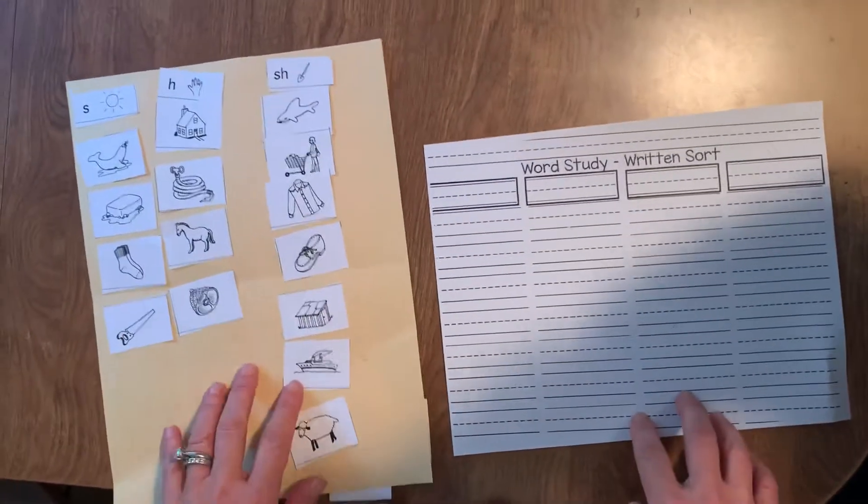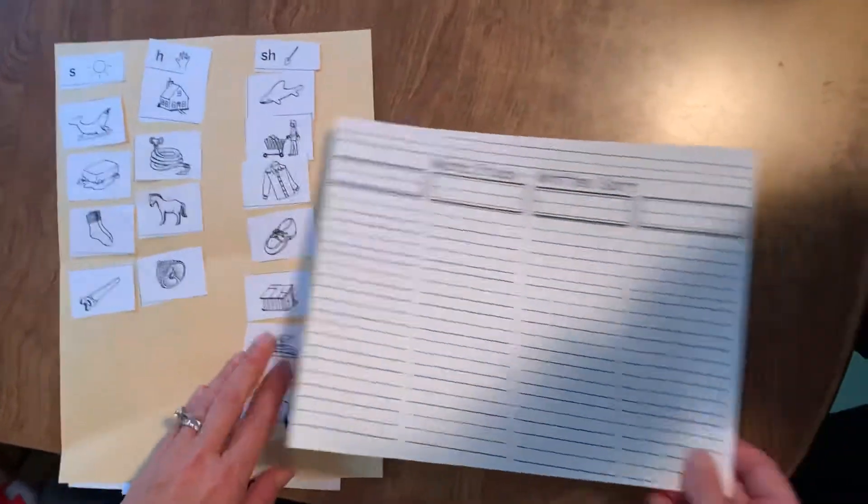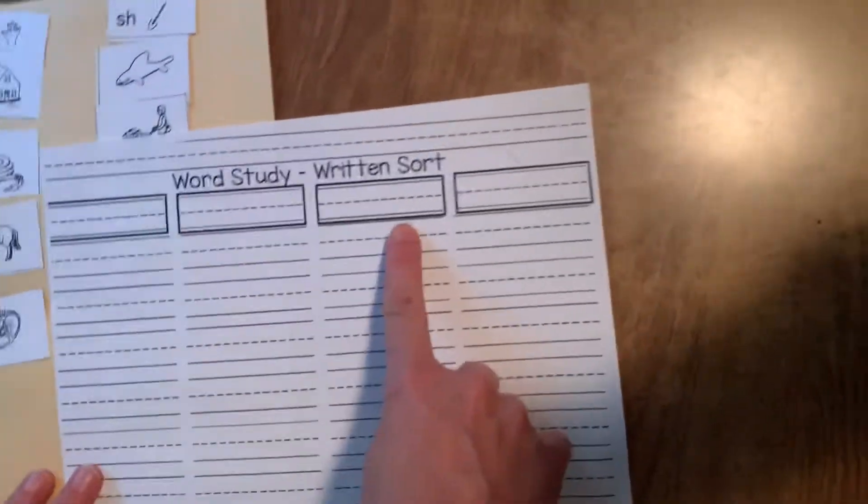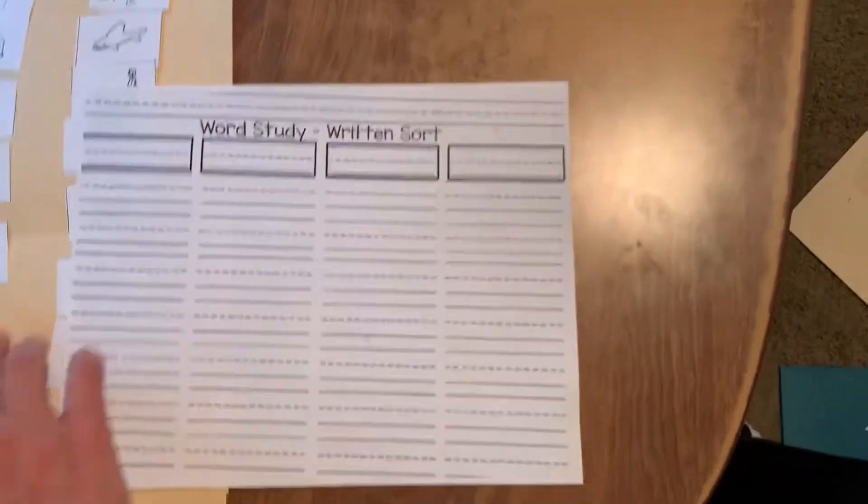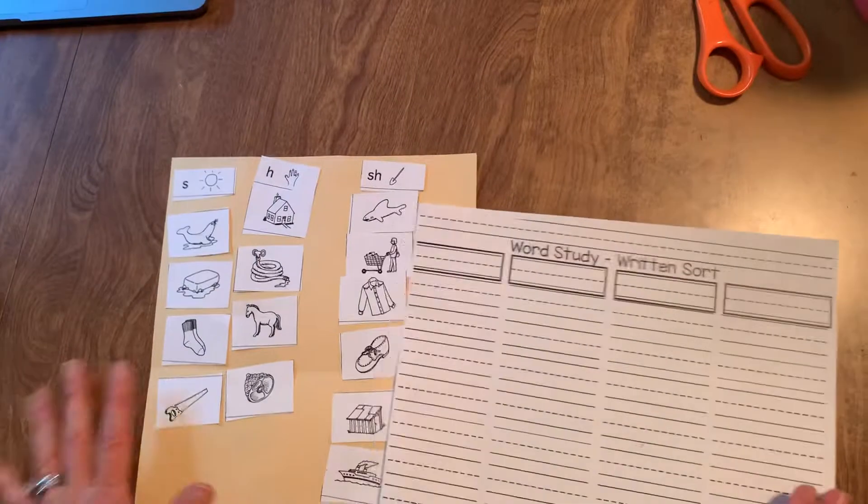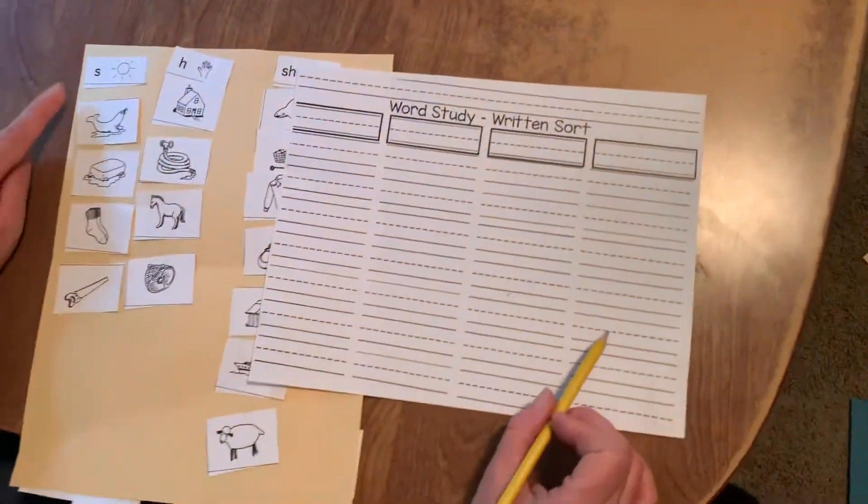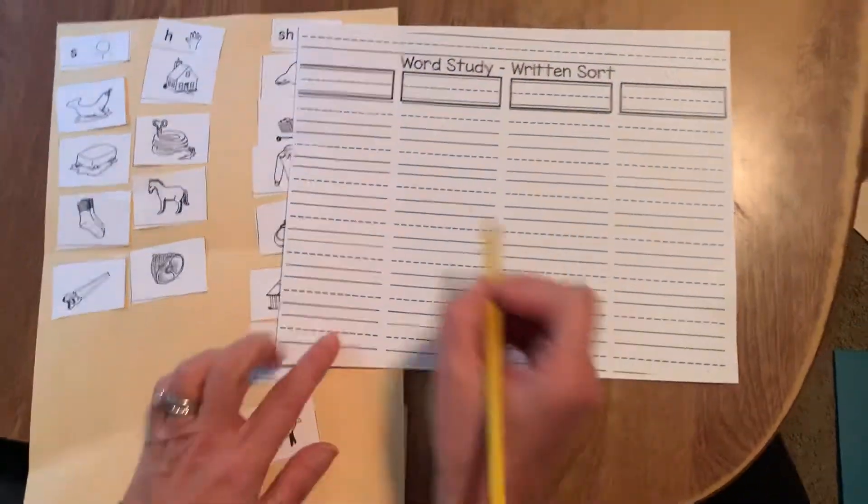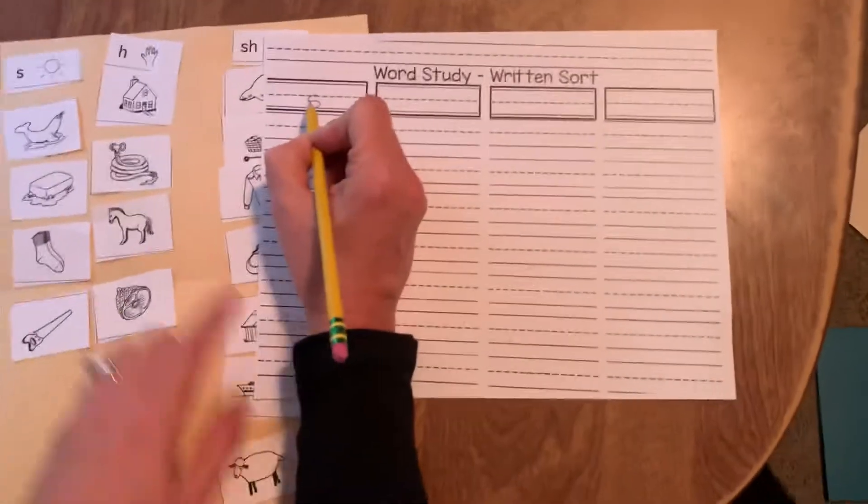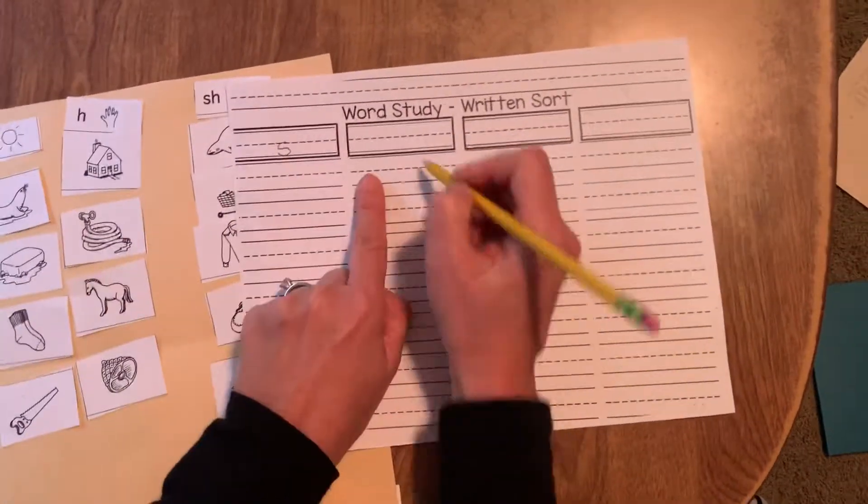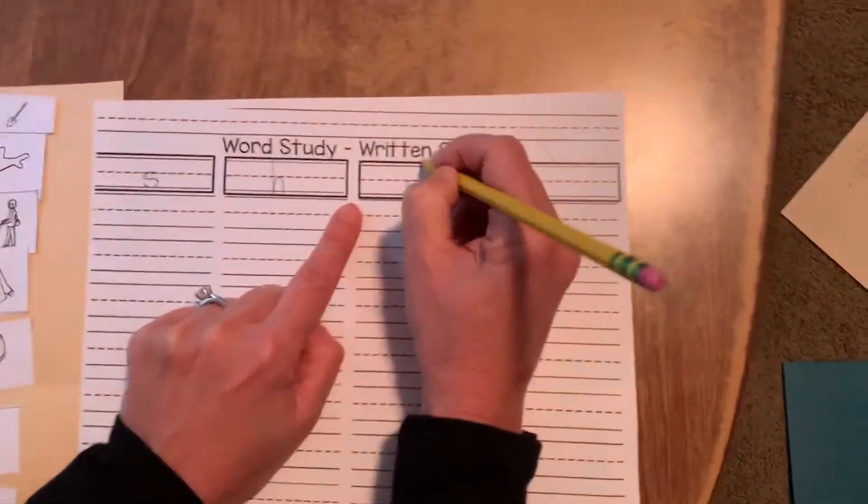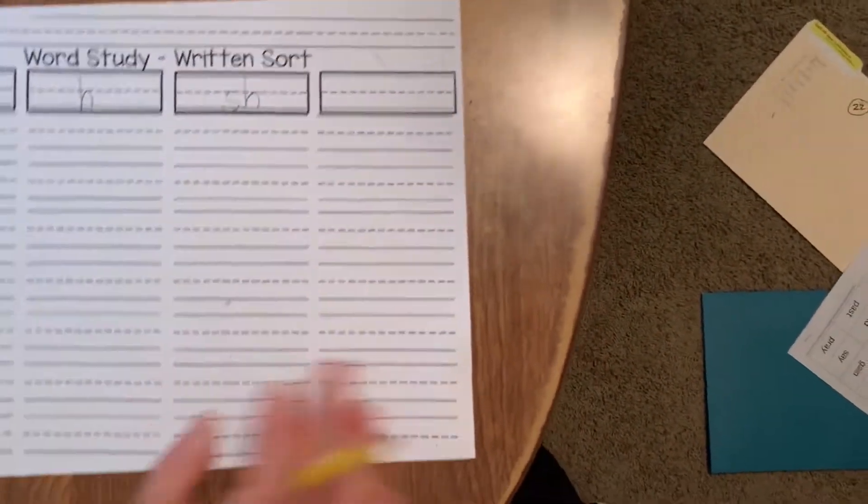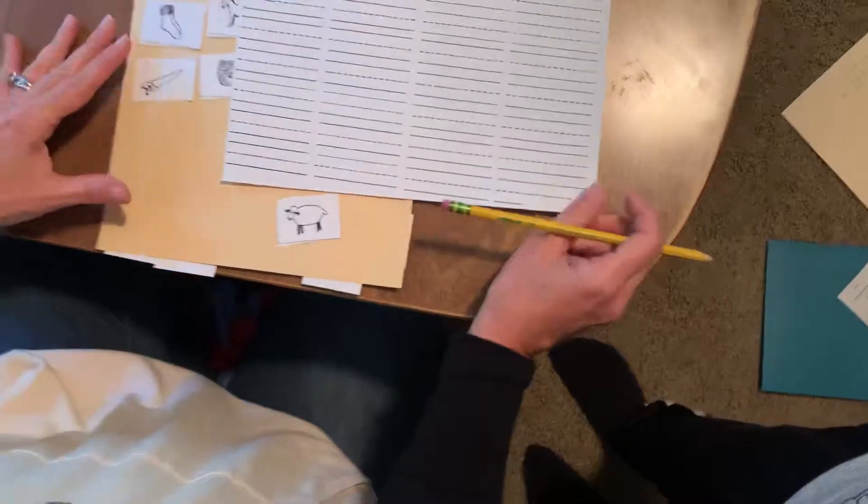When they're done gluing them down, they take this word study written sort paper. They need to write all the words down. This skill is really important, transferring to the written word. So they're going to write in order that they glued. Well, let's put the headings on first. We have the S words, then we have the H words, and then we have the SH words. So here's where you can help.